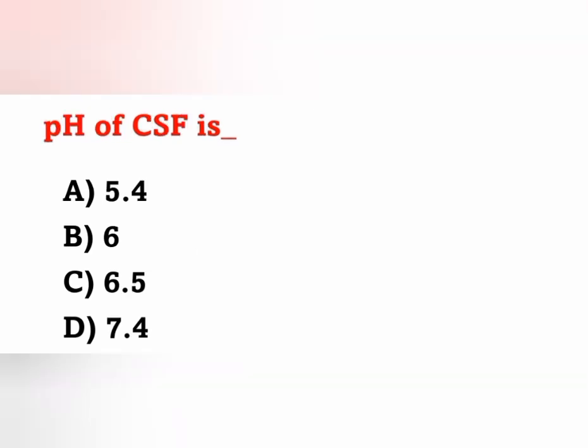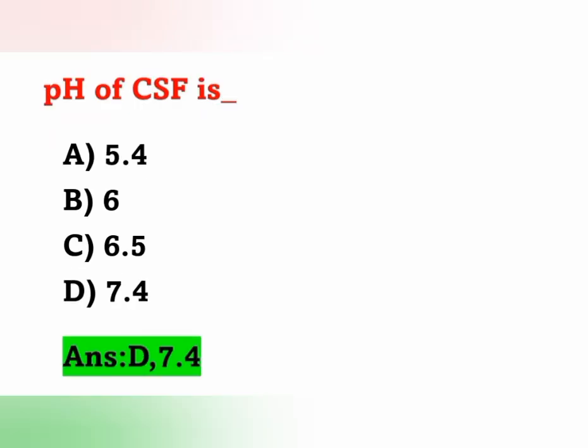Next question: pH of CSF (cerebrospinal fluid). Options: A) 5.4, B) 6, C) 6.5, D) 7.4. CSF is slightly alkaline in nature and its pH is 7.4. Option D is the correct answer. CSF is produced from the choroid plexus of the lateral ventricles of the brain and is absorbed in the arachnoid villae — both are important previous year exam points.